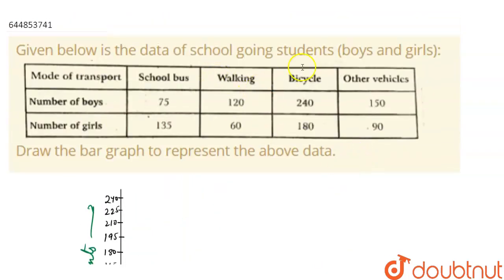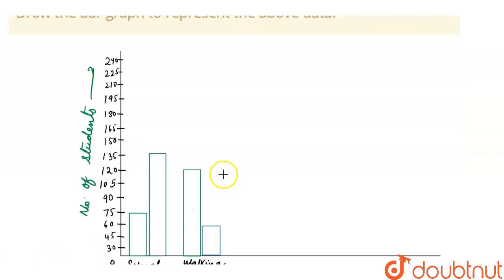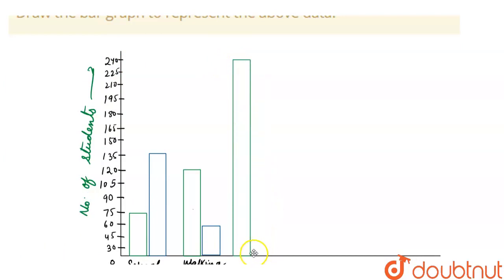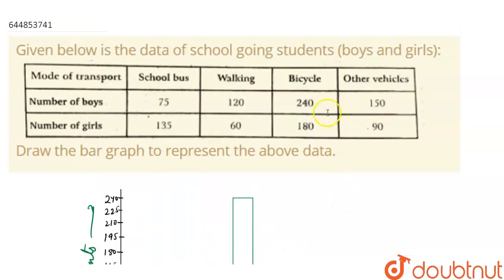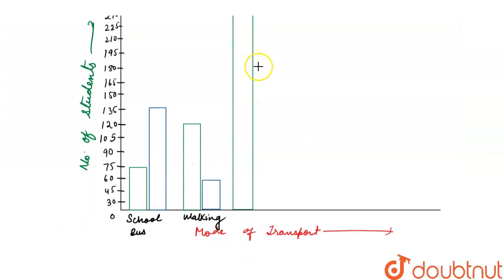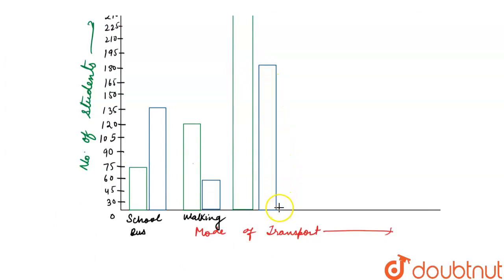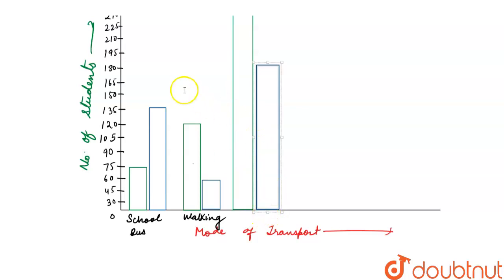Now let's move to the next category, which is bicycle. For bicycle, number of boys is 240, so the green bar goes to 240 at the top. And for girls, number of girls for bicycle is 180, so the blue bar is drawn at 180.